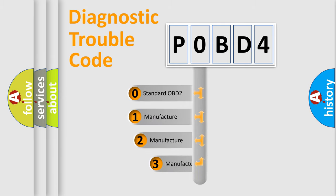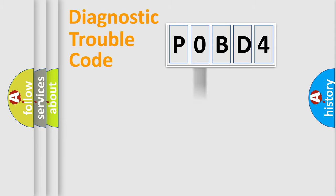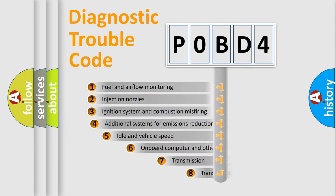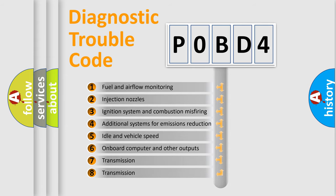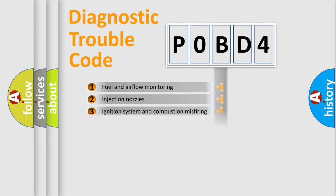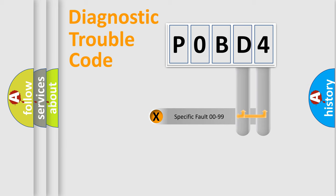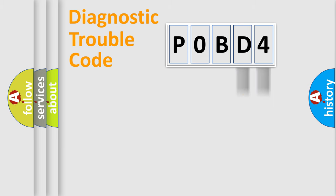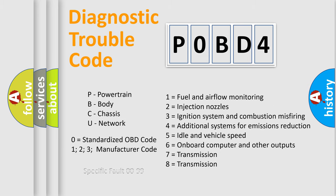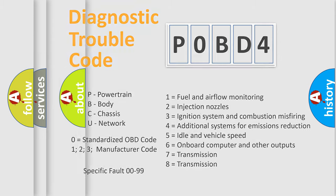If the second character is expressed as zero, it is a standardized error. In the case of numbers 1, 2, or 3, it is a more specific expression of a car-specific error. The third character specifies a subset of errors. This division is valid only for the standardized DTC code, where only the last two characters define the specific fault of the group. Such a division is valid only if the second character is expressed by the number zero.